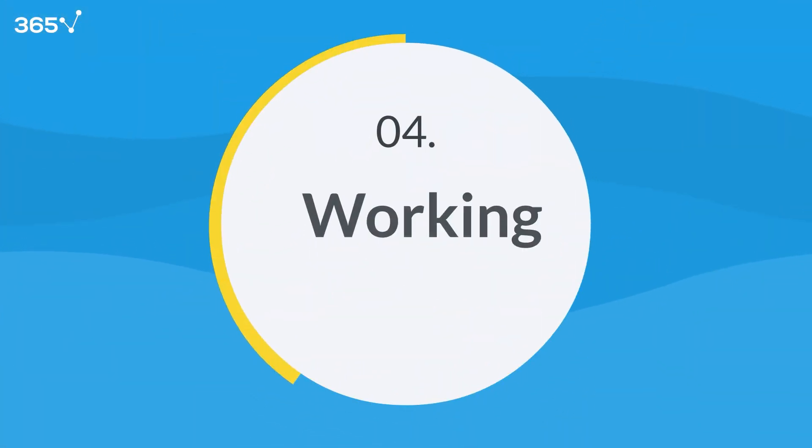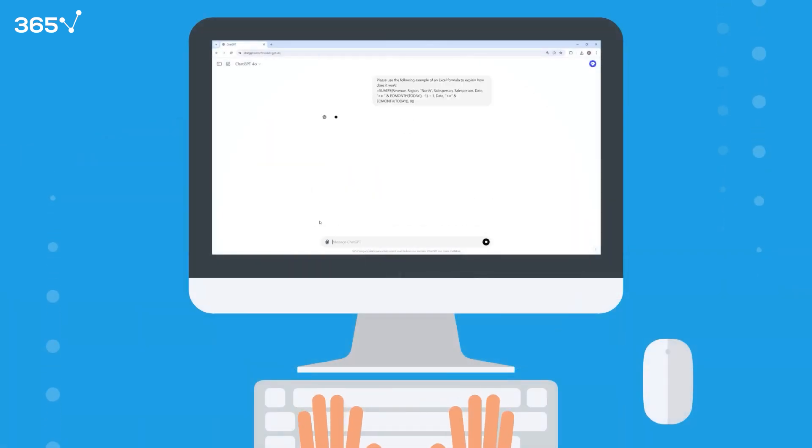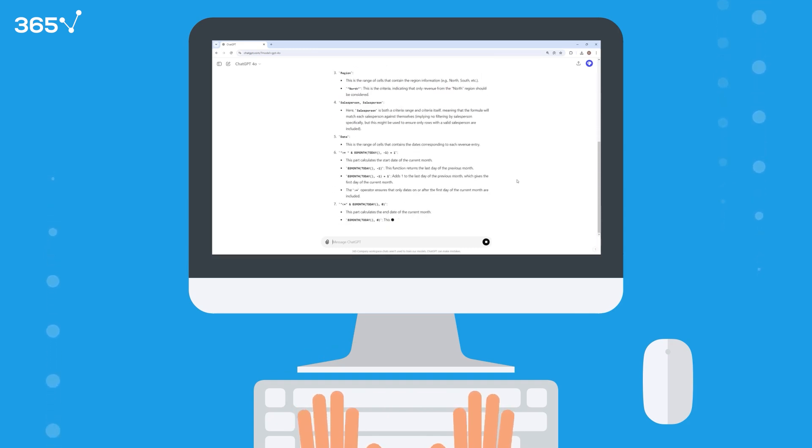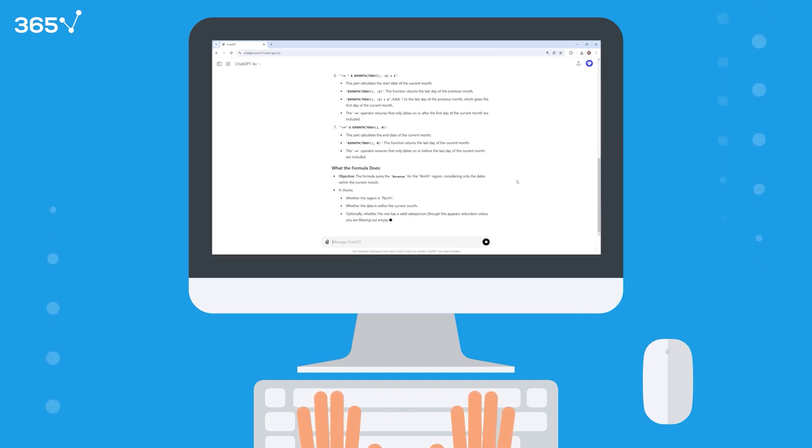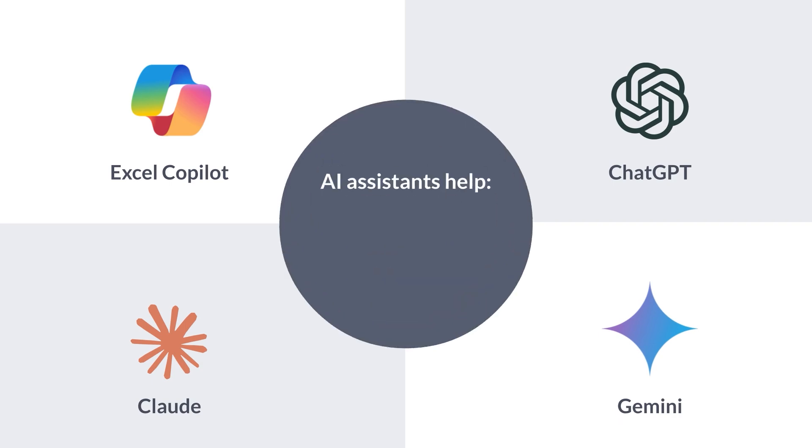Skill number four: working with AI. AI has moved from trend to tool, now powering everyday finance operations. And the key skill? Knowing how to work with it. You don't need to build AI models or code neural networks, but you do need to know how to use tools like Excel Copilot, ChatGPT, and other AI assistants to boost your speed, accuracy, and impact.